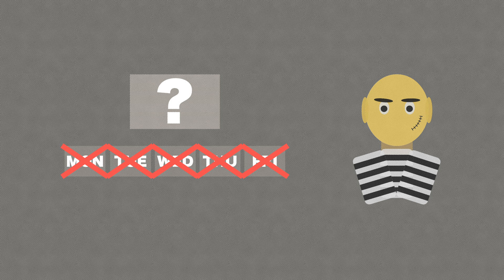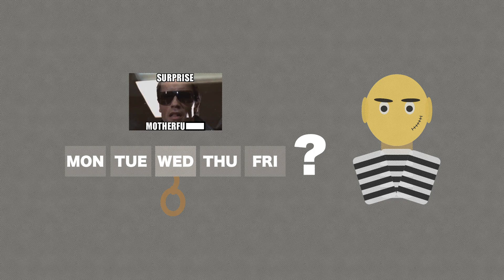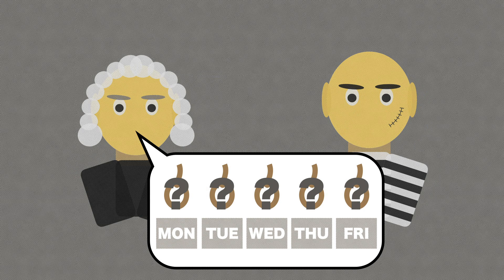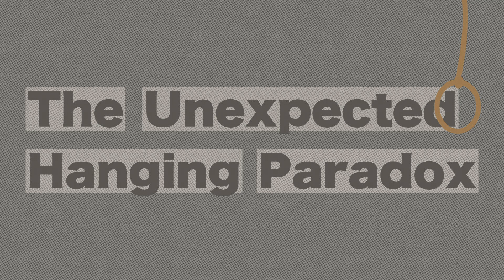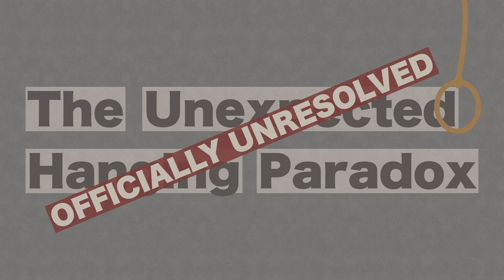Where was the flaw in the prisoner's logic? And if there is none, then how come that a judge was able to hold his promise and surprise him, even though the prisoner deducted that this would be impossible? This age-old philosophical conundrum is called the unexpected hanging paradox, and it hasn't officially been resolved until this day.